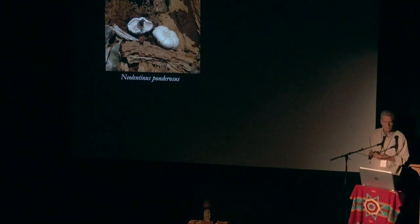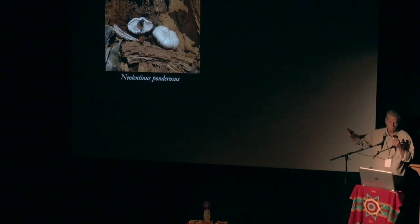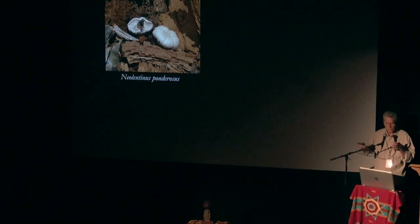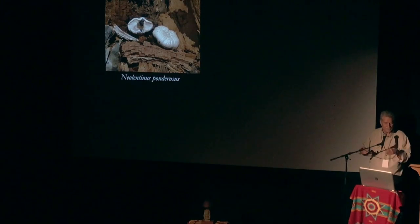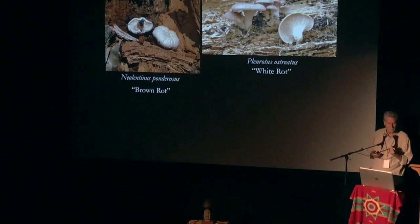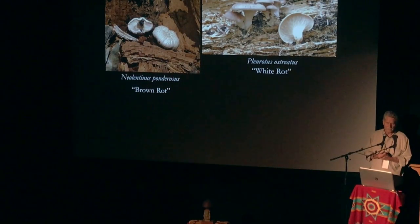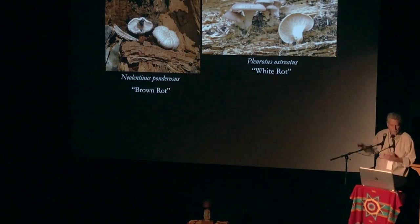Here is Neolantinus ponderosus. You might know it as the train wrecker — when they were making trains for old mining towns, they used firs, cedars, and spruces, mostly property spruces, and made railroad ties. But of course they were half rotten already. The mycelium was in there, and the trains would derail, so they called them train wreckers. Anyway, it's a brown rot. And this one's an oyster mushroom, which you also know. The wood doesn't look brown at the end — it looks white, and it looks stringy rather than in cubical, cube-like brown cubes.